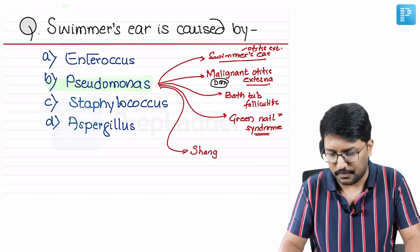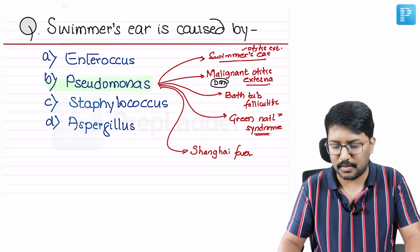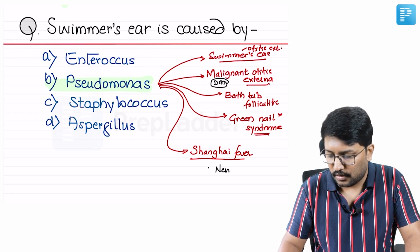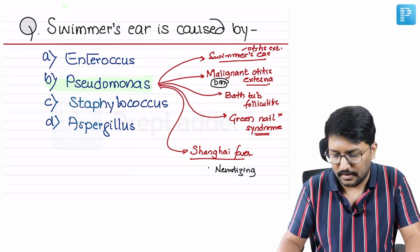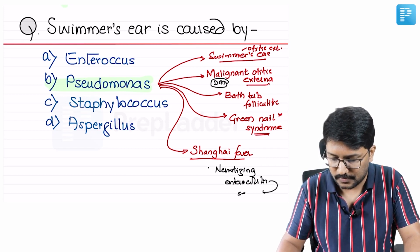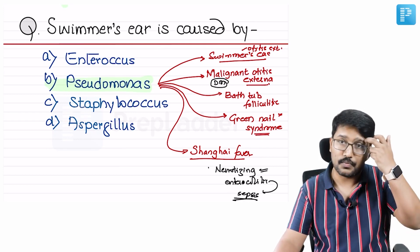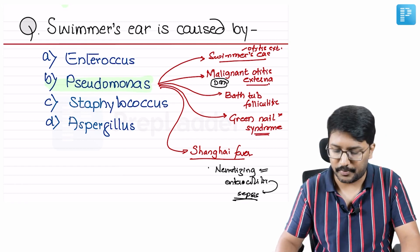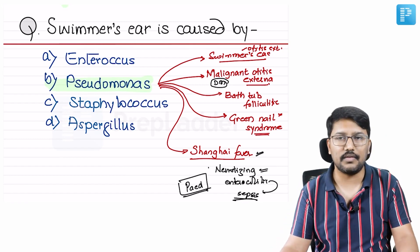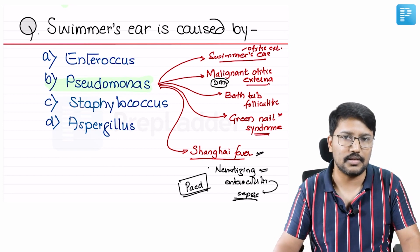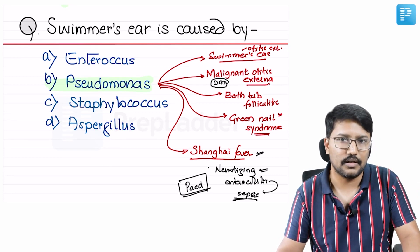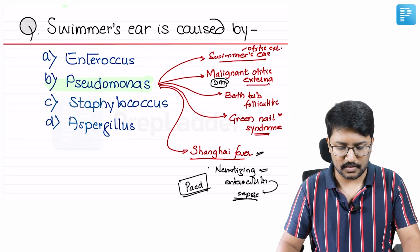Remember Shanghai fever — PGI has asked this twice and it is a repeating template. Shanghai fever is a form of necrotizing enterocolitis leading to sepsis, acquired through the enteral route, typically seen in the pediatric age group. It is associated with very high mortality, exceeding 70–80% in reported studies. Shanghai fever is caused by Pseudomonas.